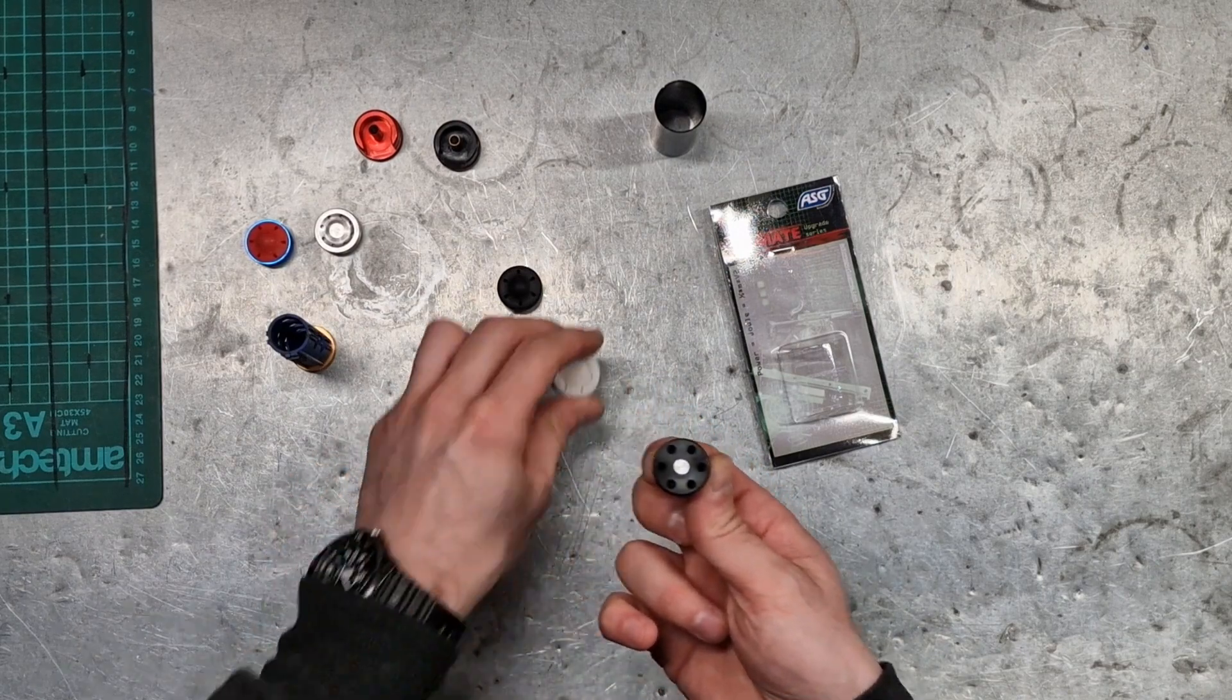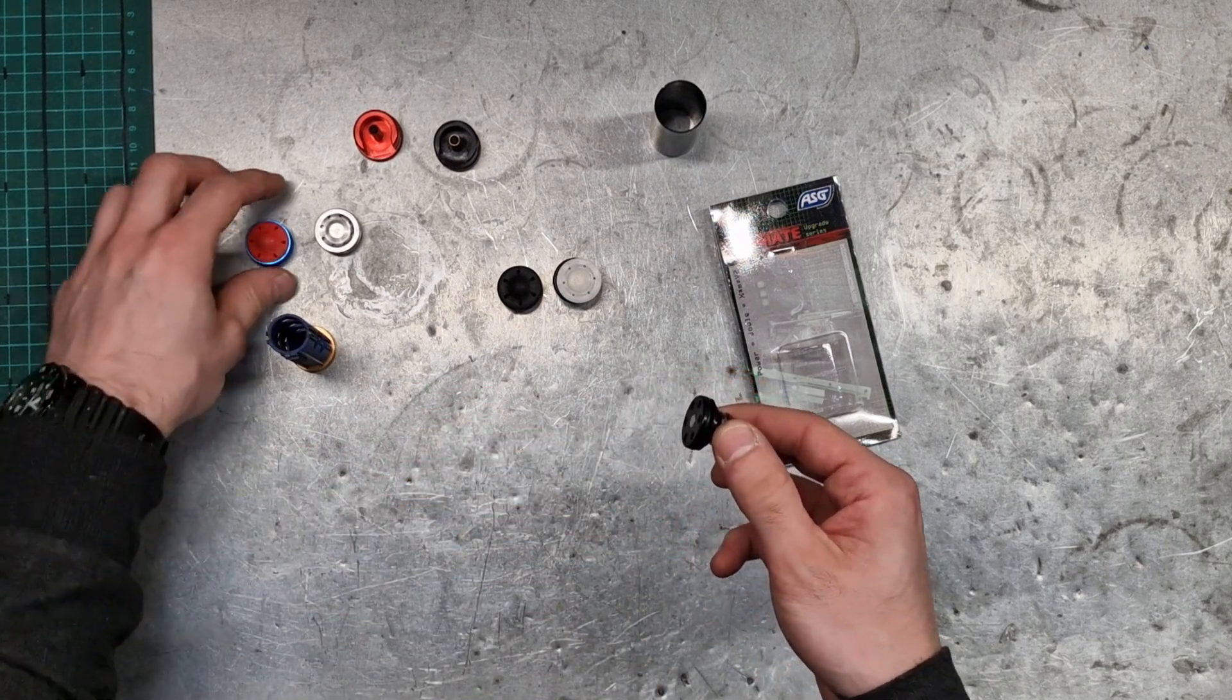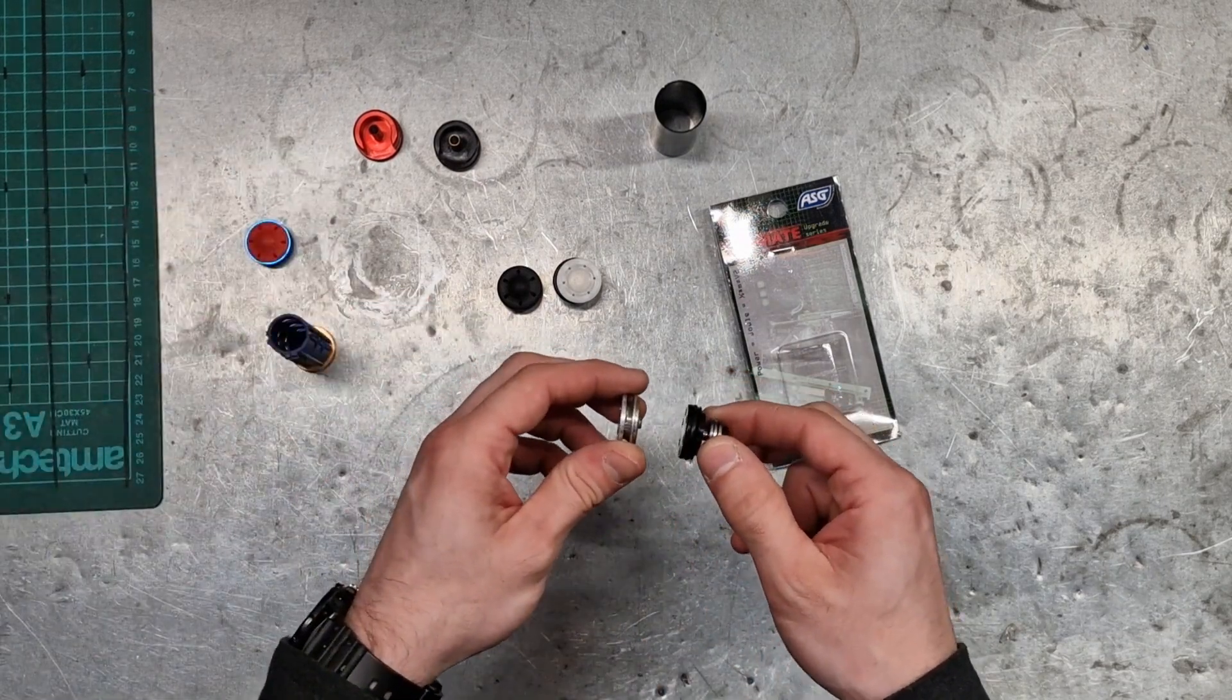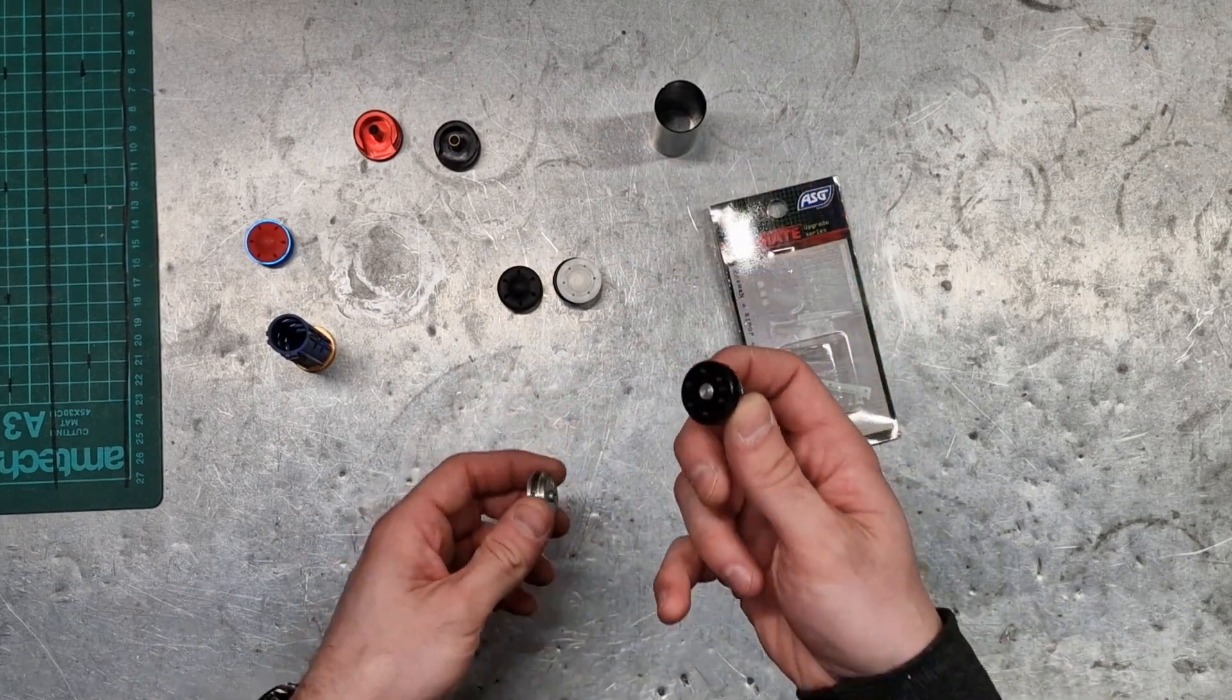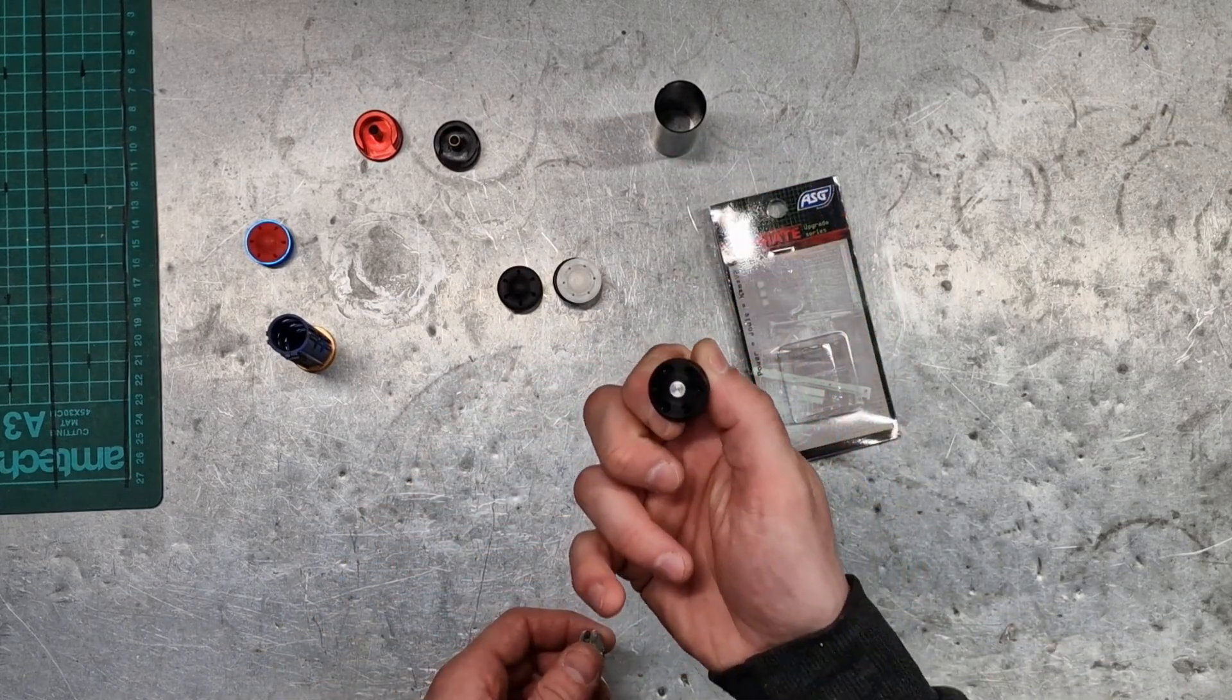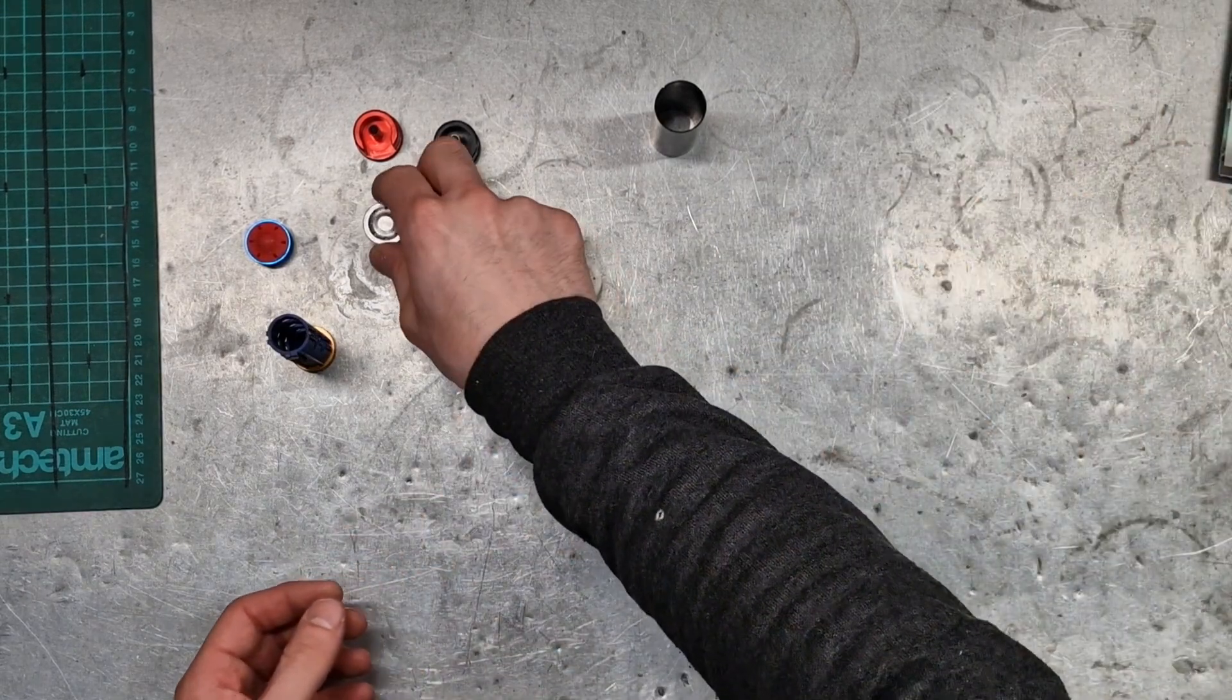Now the differences over an aluminum one is the plastic one isn't going to scratch the living crap out of your cylinder, so the build generally is going to last a lot longer. Now I'll quickly go over and show you a better example.